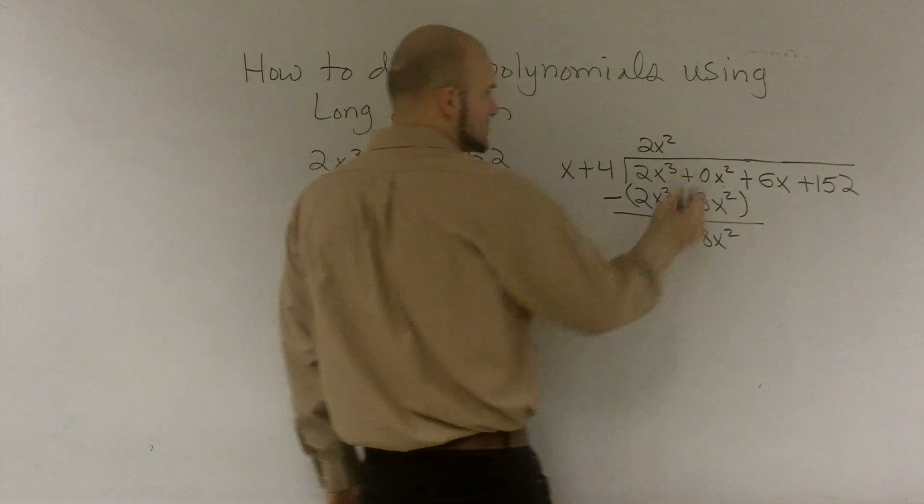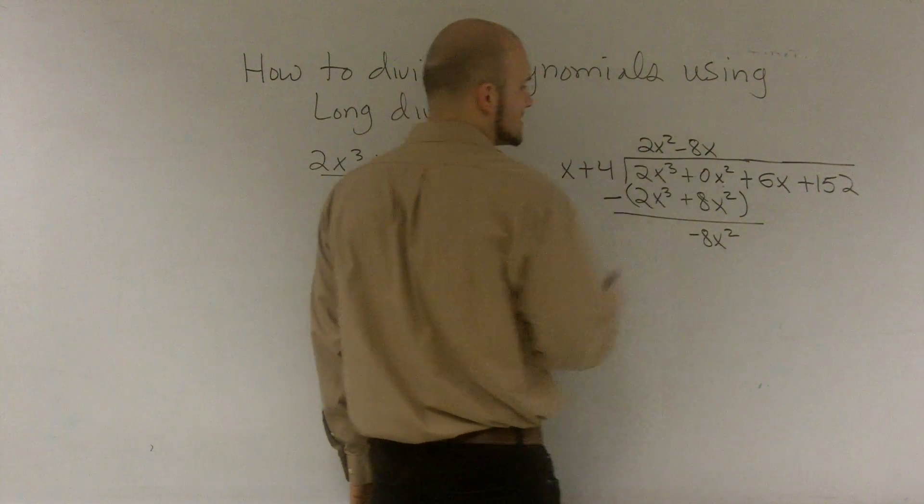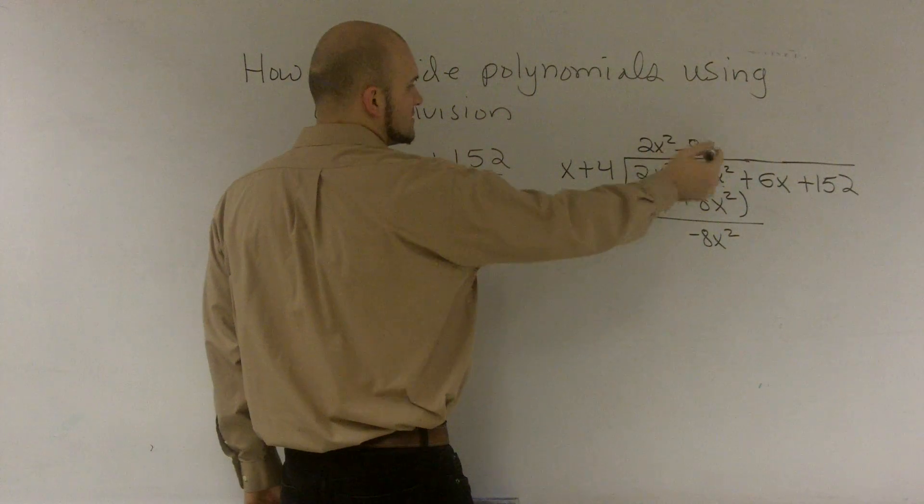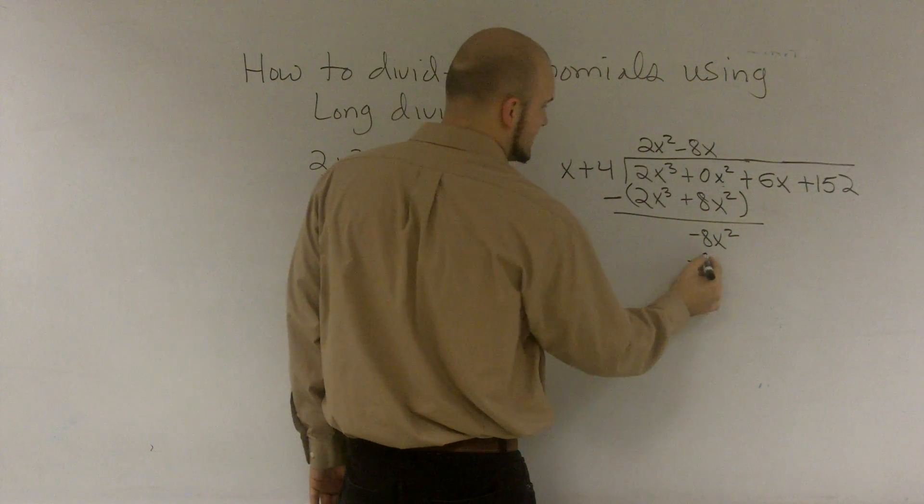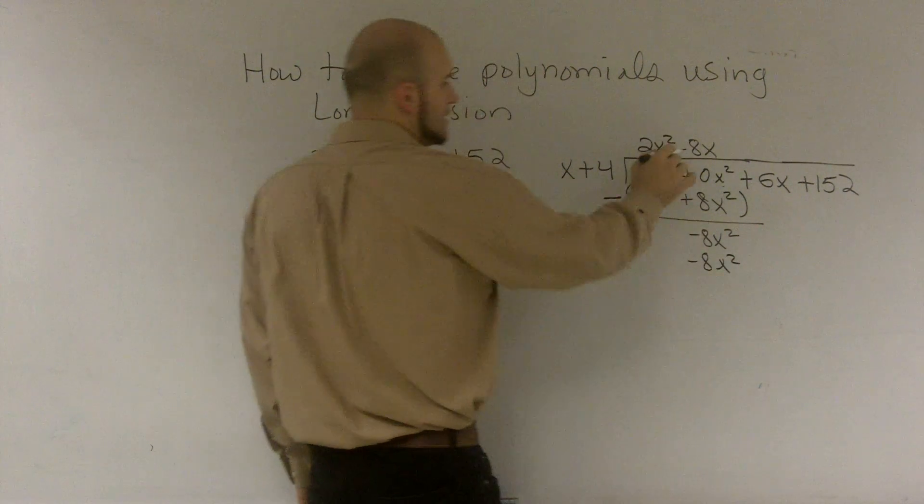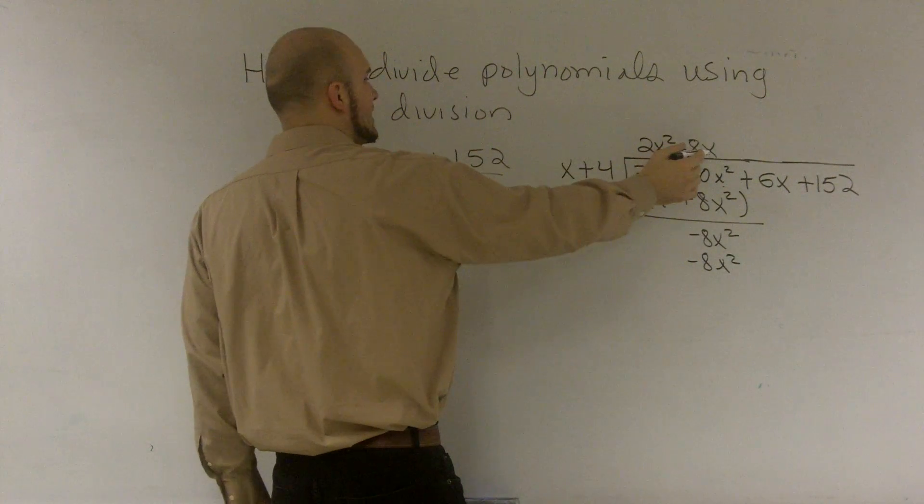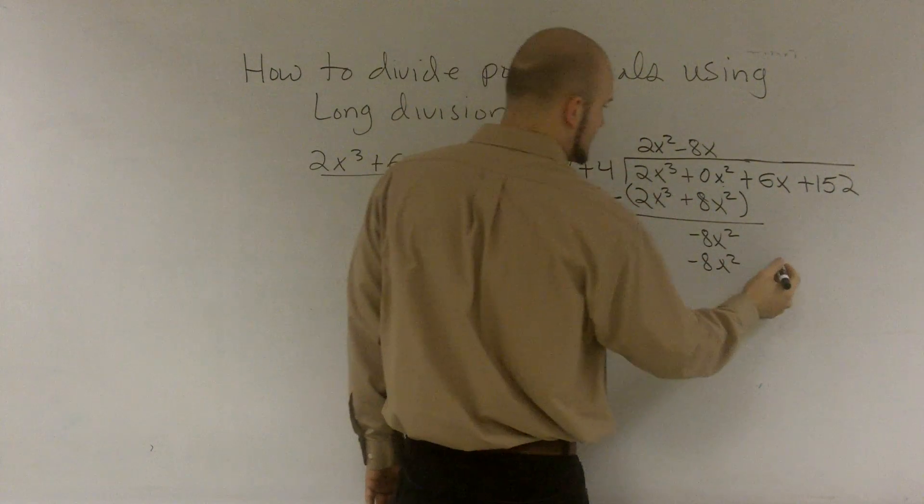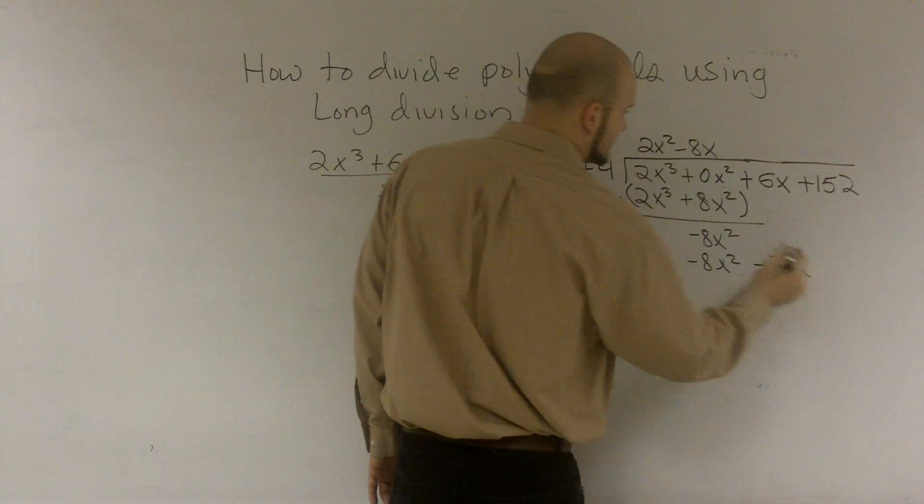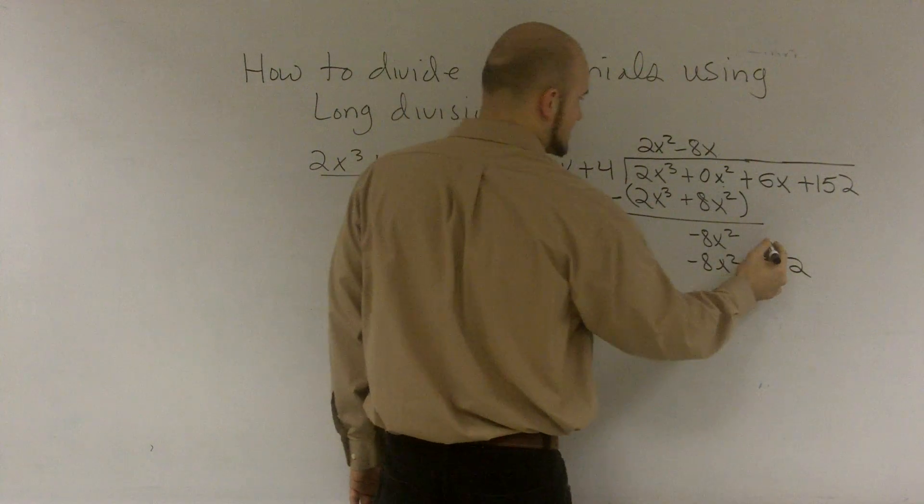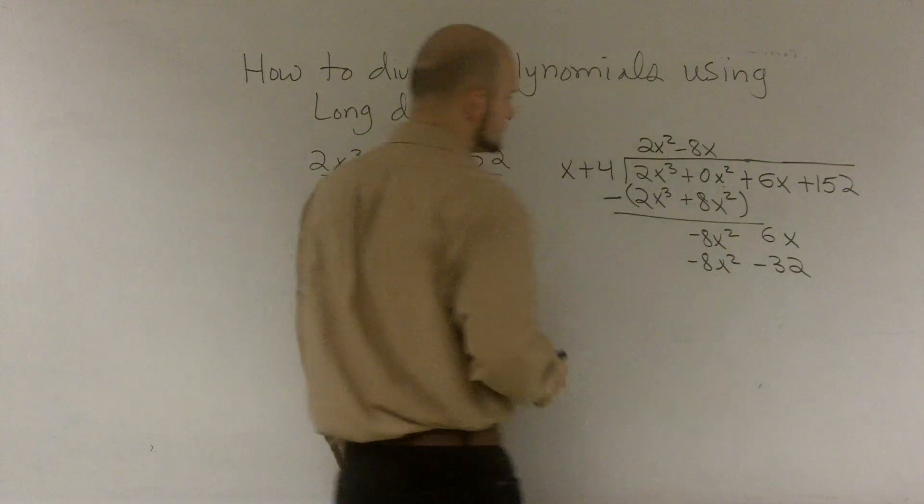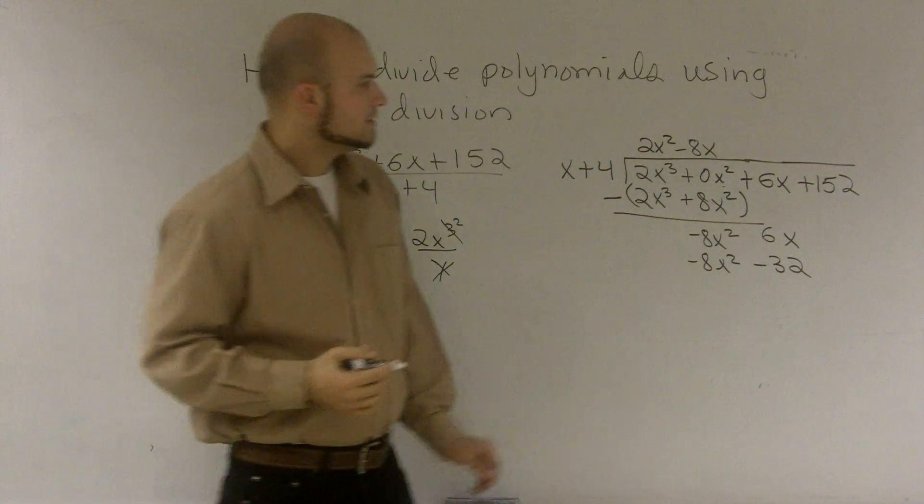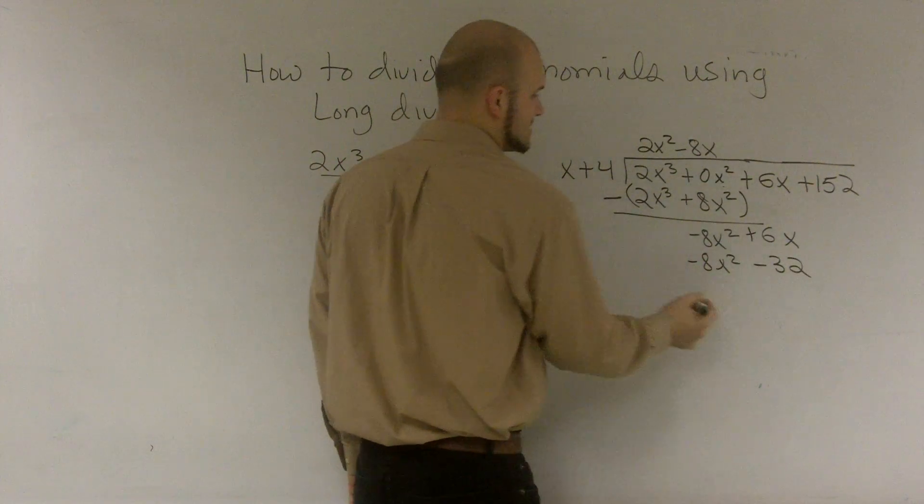Now x goes into negative 8x squared, negative 8x times. Negative 8x times x becomes a negative 8x squared. Negative 8x times 4 is a negative 32x. So now I'm going to bring down my 6x, and remember that's a positive 6x.